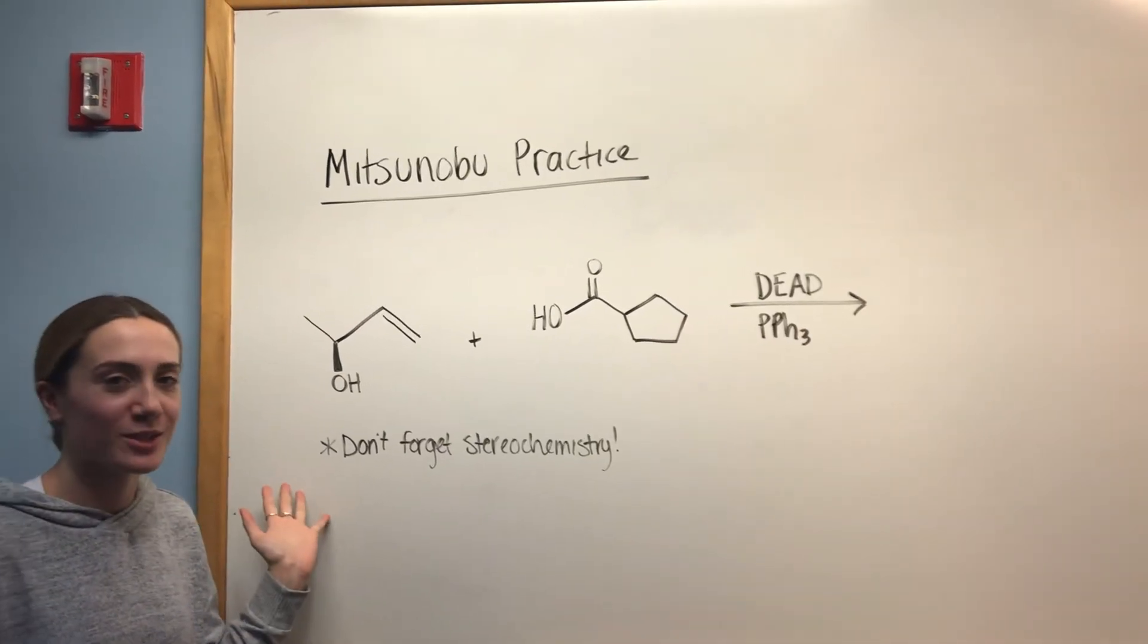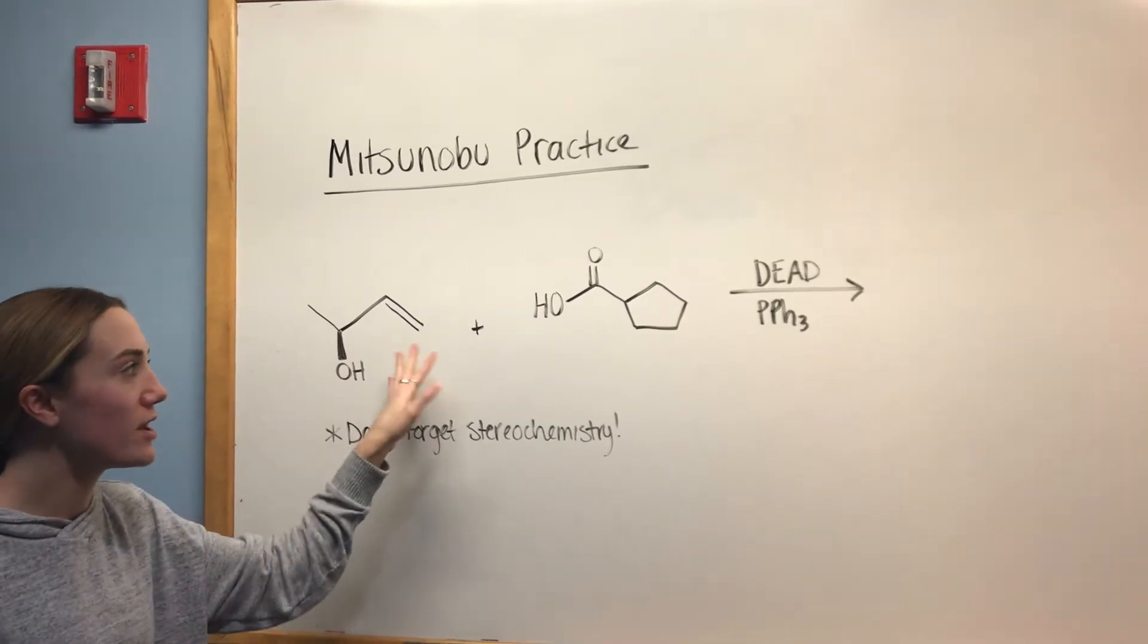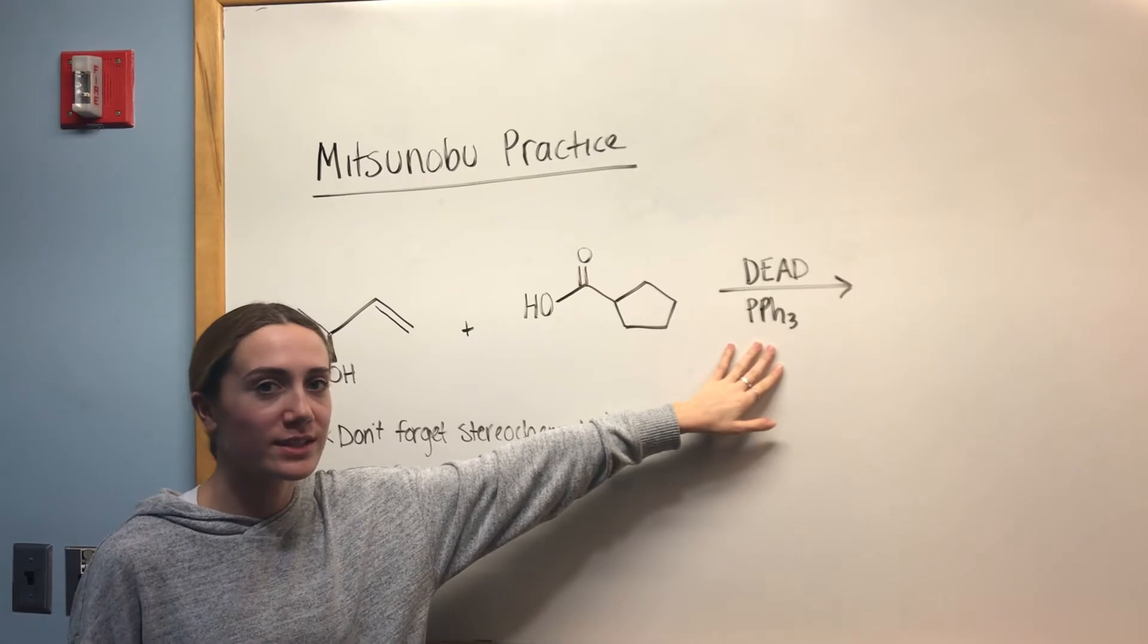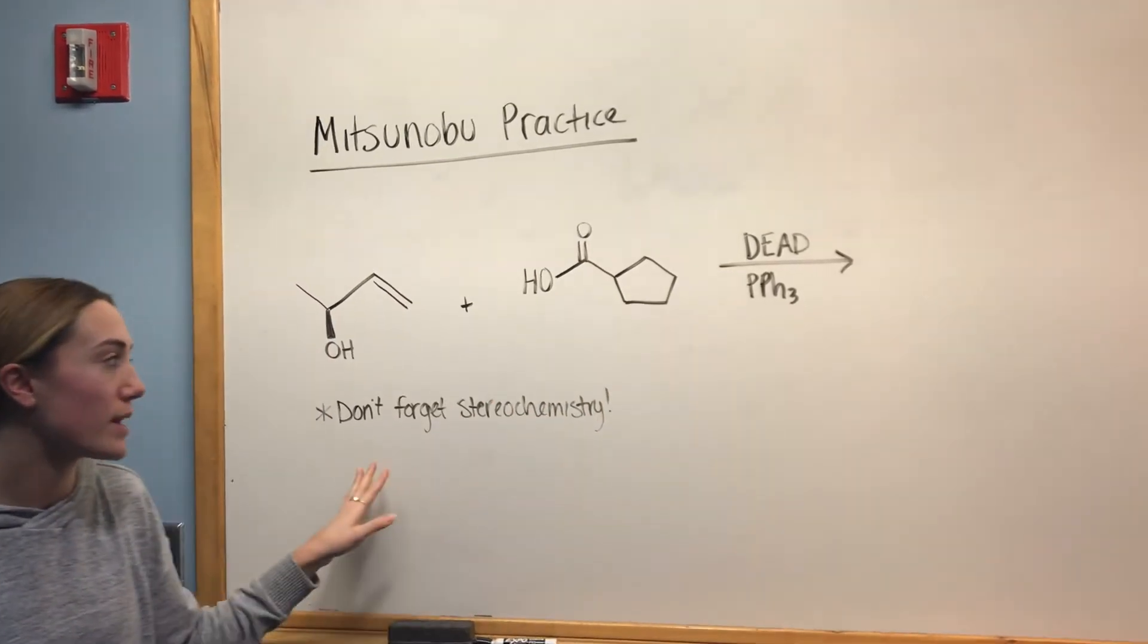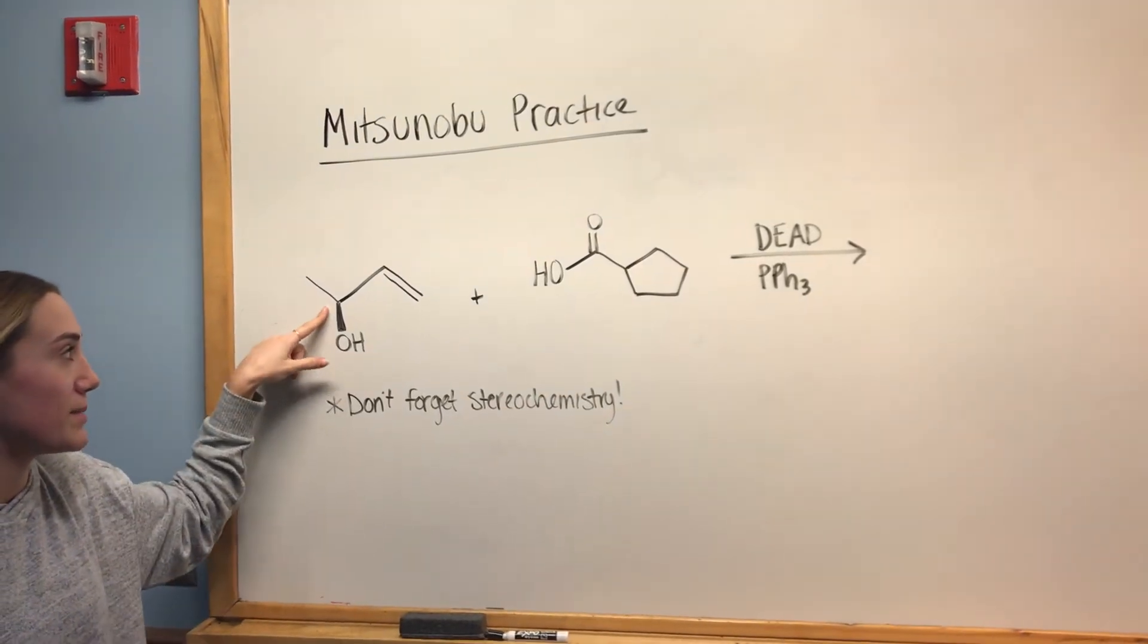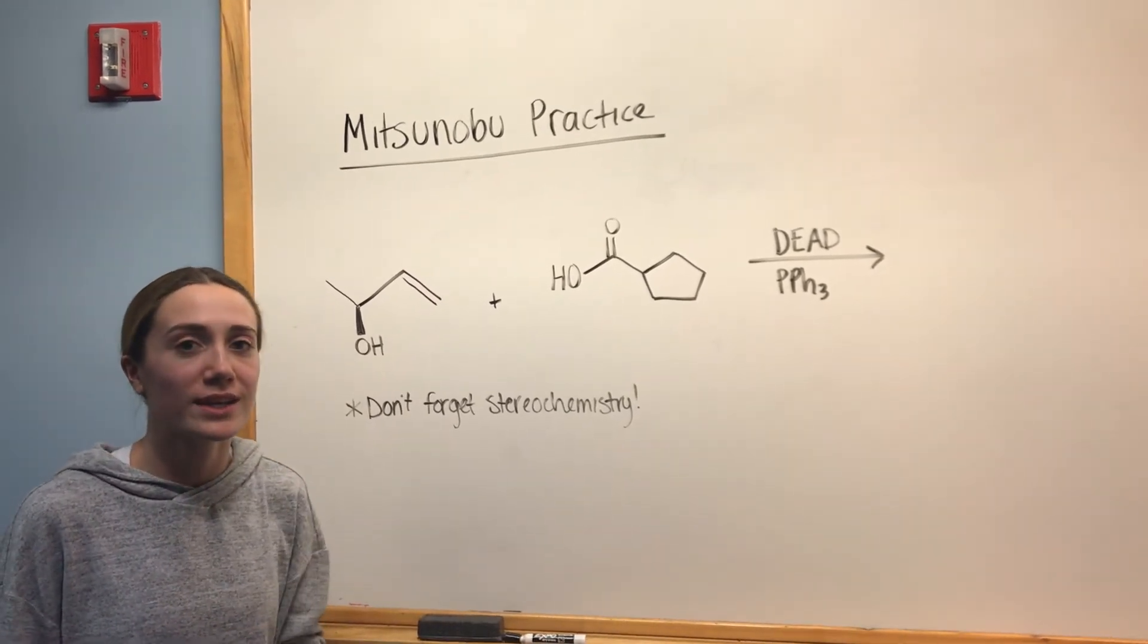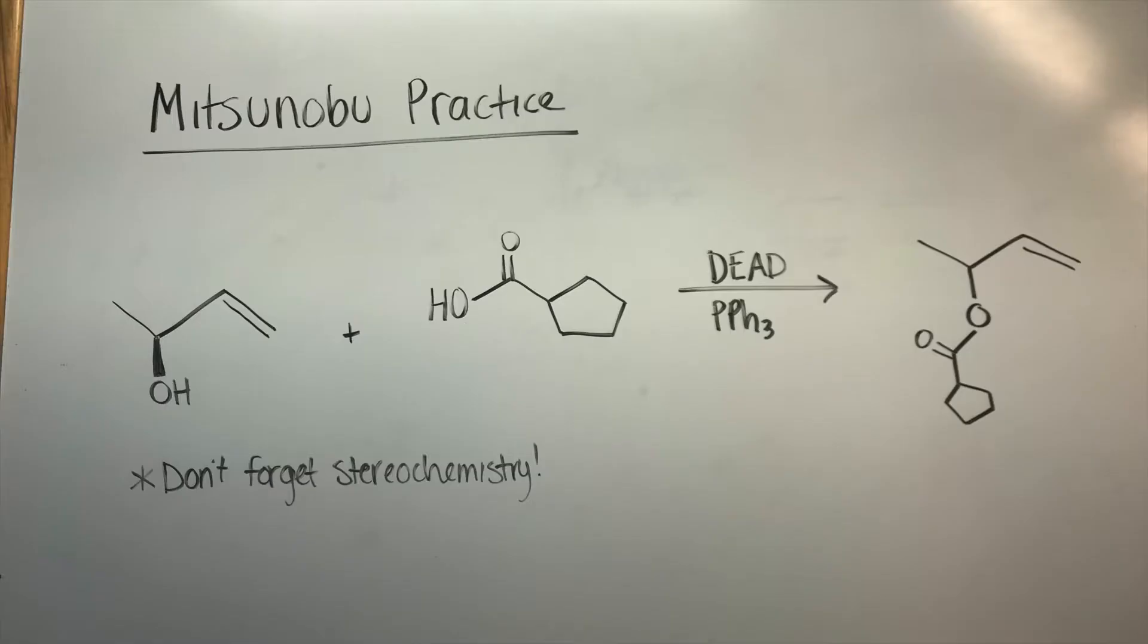Here we have a practice problem with the Mitsunobu reaction. See if you can, on your own, take these two reactants and these reagents and figure out the product. If you work through the mechanism, you'll see that something happens at this central carbon. Don't forget about paying attention to stereochemistry in the mechanism. In the product, we have that carbonyl that's replaced the alcohol. And at the center carbon, there's inverted stereochemistry.